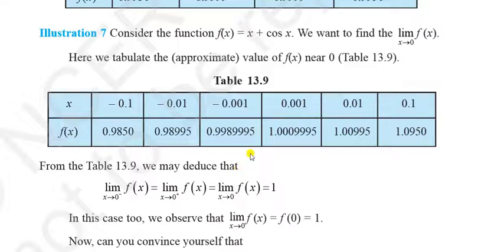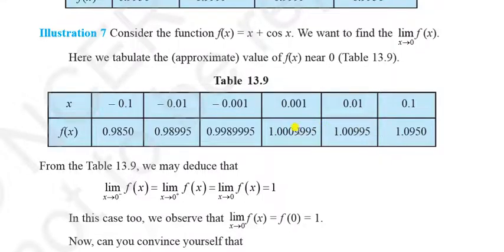Next example: f(x) = x + cos x. Find the limit at x = 0. From the left: x = −0.001, −0.01, −0.1 give function values 0.9850, 0.9895 — increasing toward 1. From the right: x = 0.001, 0.01, 0.1 give values 1.0009, 1.00995 — decreasing toward 1. Left-hand limit = 1, right-hand limit = 1. Both approach 1. So the function has limit 1 at x = 0.